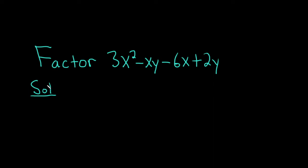So whenever we have four terms and we're trying to factor something, we should try to use something called factor by grouping. In factor by grouping, we basically look to factor a common factor from these two terms and also from these two terms.